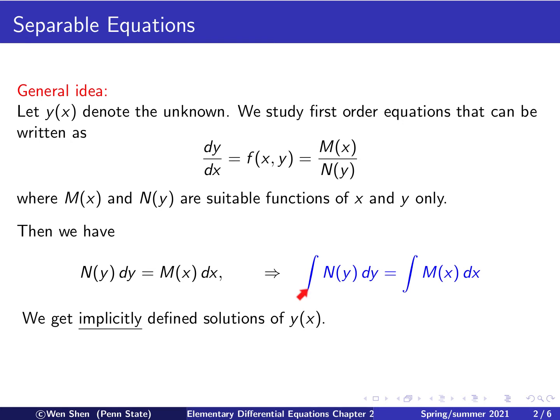And since these are all indefinite integrals, there is the arbitrary constant. In the end, we will get an implicitly defined solution for y as a function of x. Because this, as written, is not explicit that y equals something of x, it's something of y equals something of x. I would like to call attention that there is the integration constant implied by the indefinite integrals.